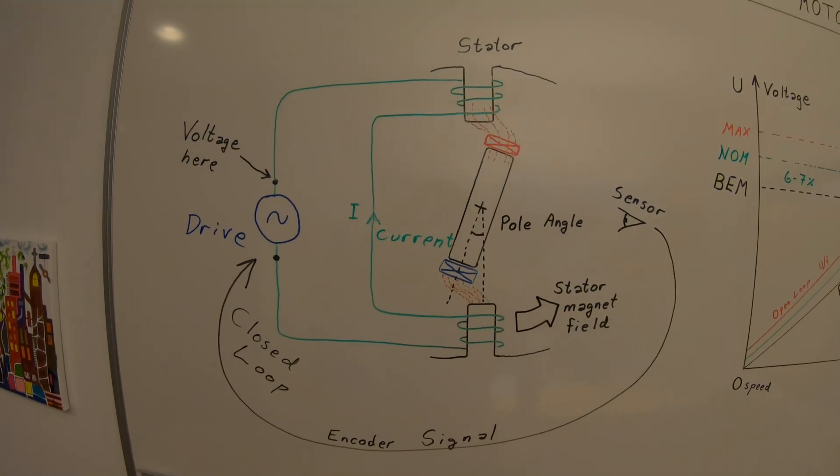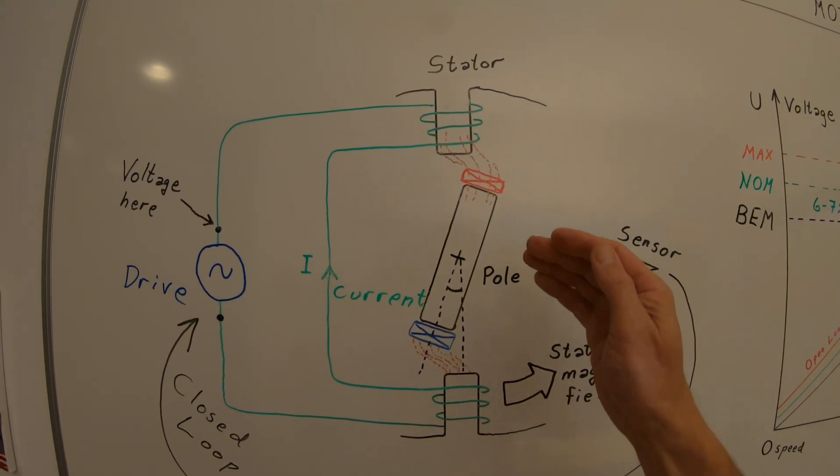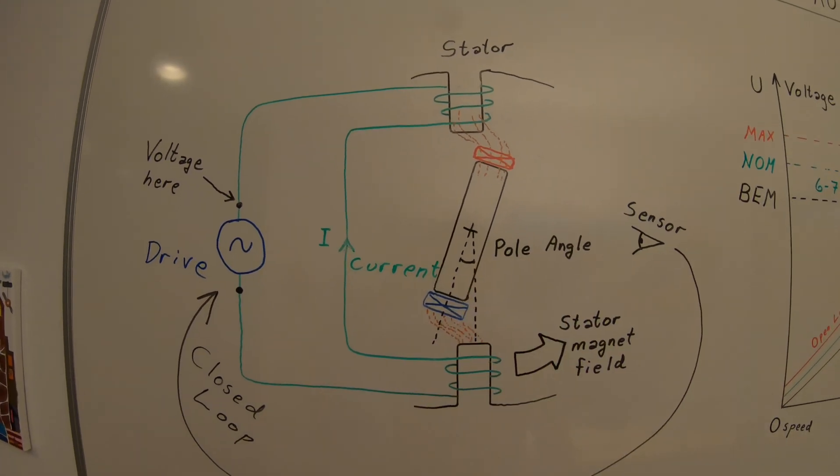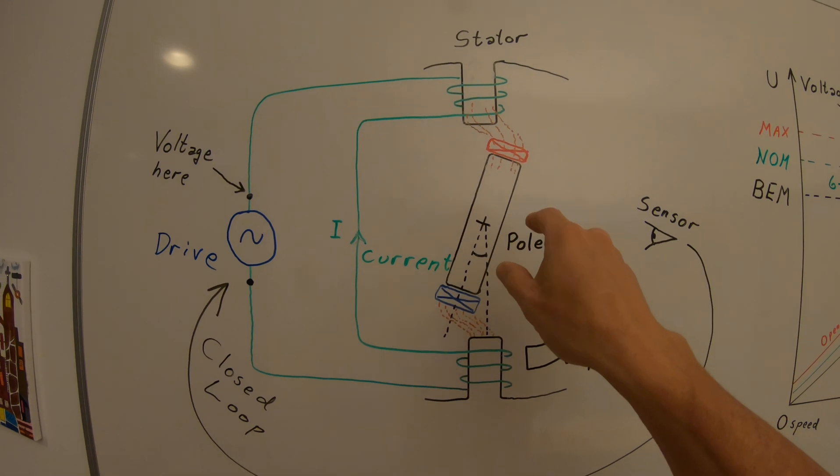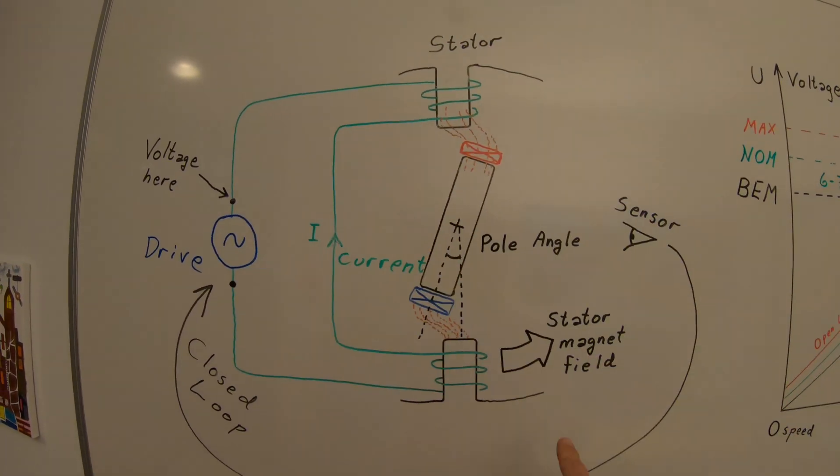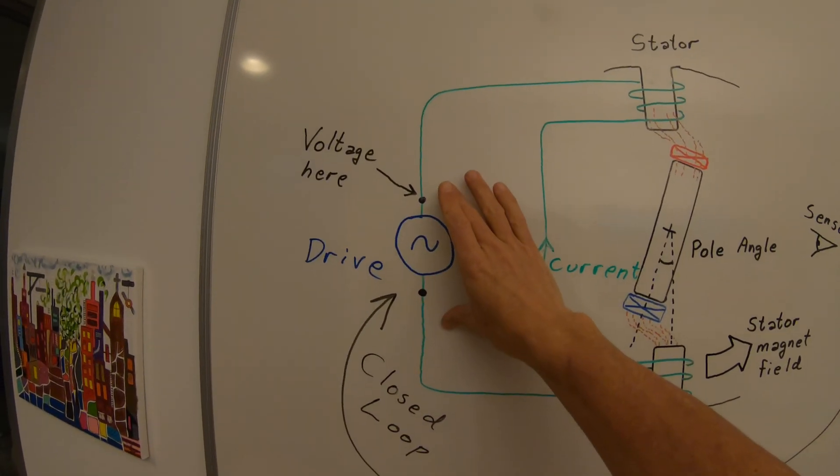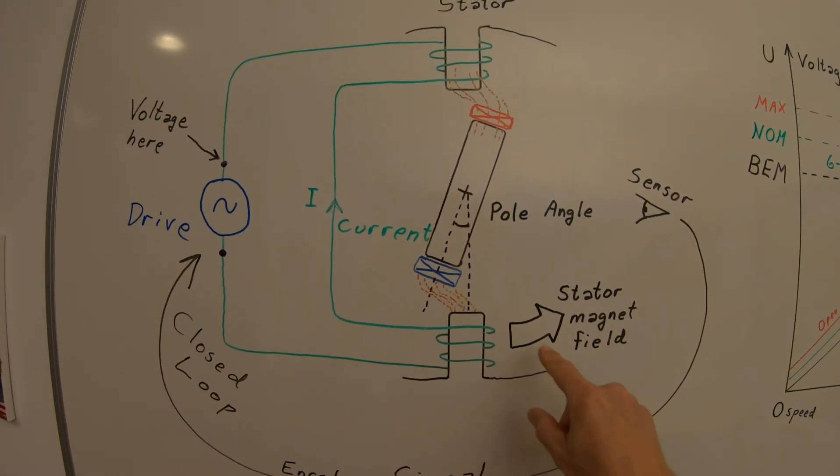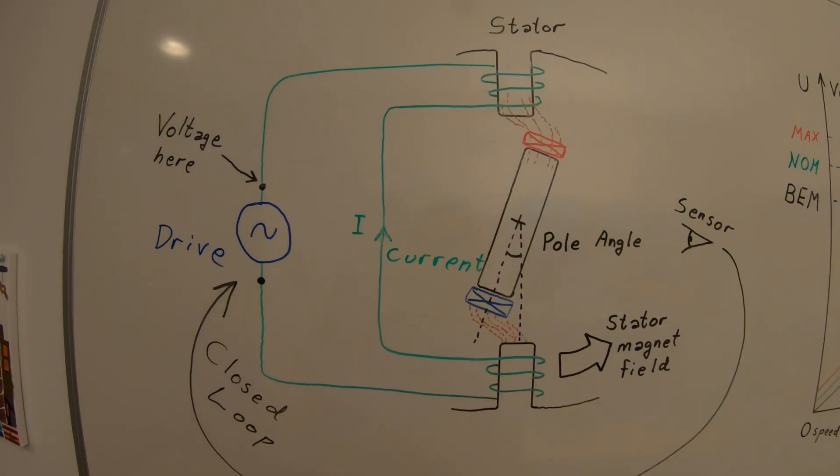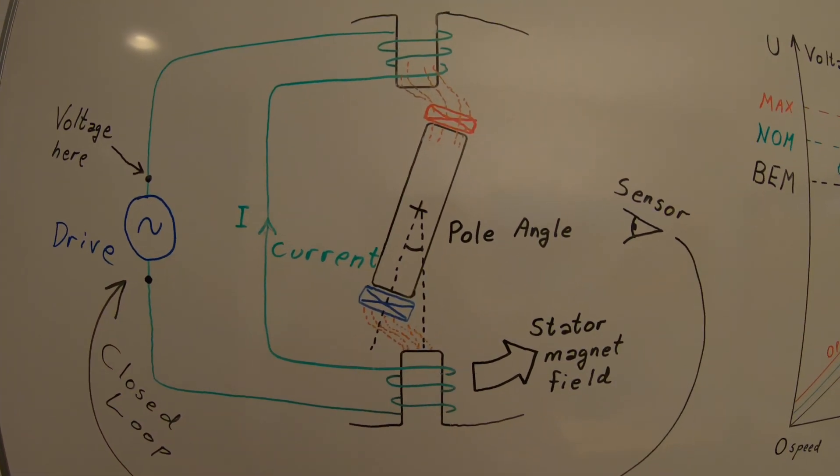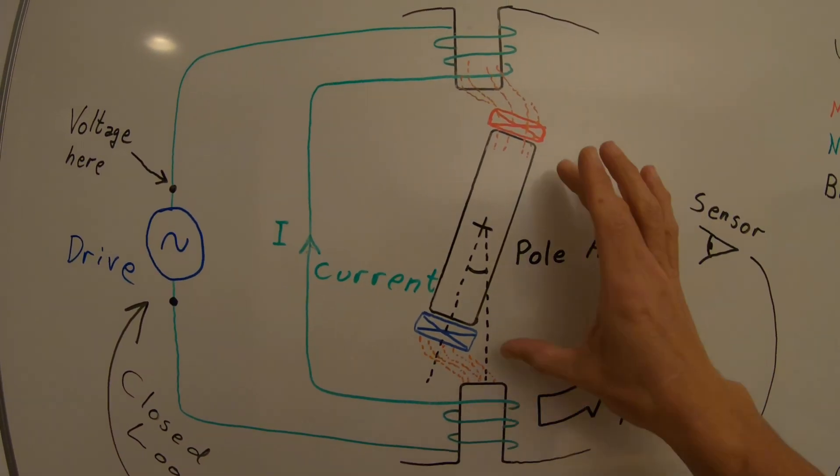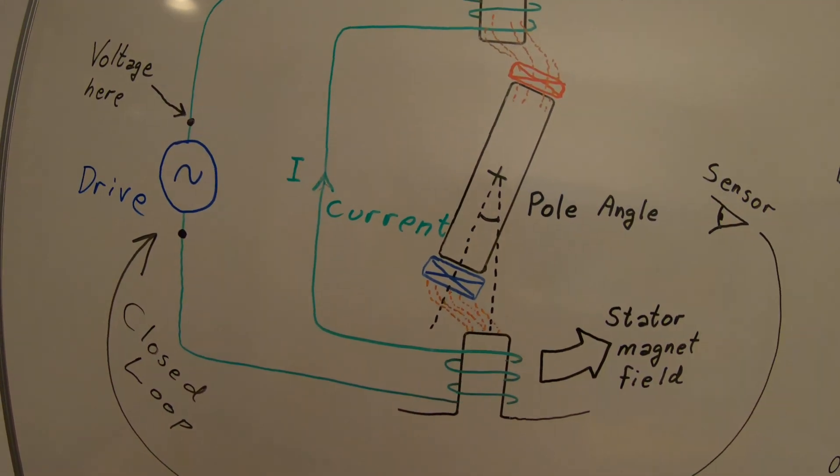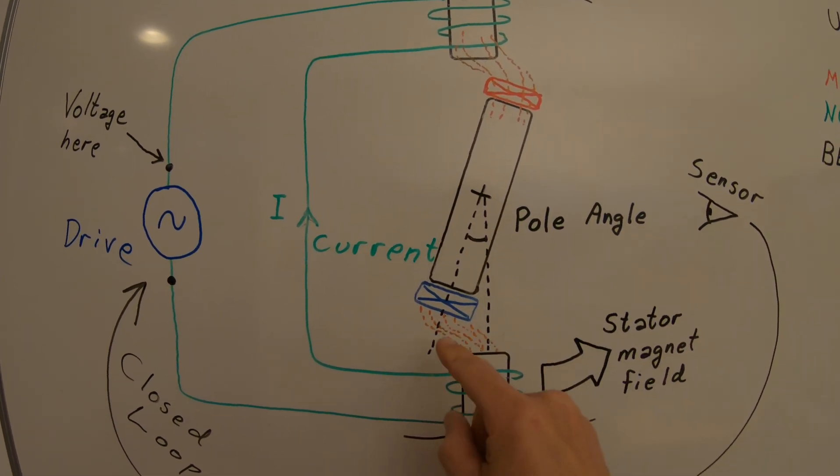Let's put our motor under load. We pitch the ship propeller and we want full forward and rotate as fast as possible. So what happens is that the frequency converter will rotate the stator magnet field. Now the propeller is hard to drive, it's heavy. So the magnets, the rotor will start lagging behind. This is the pole angle.